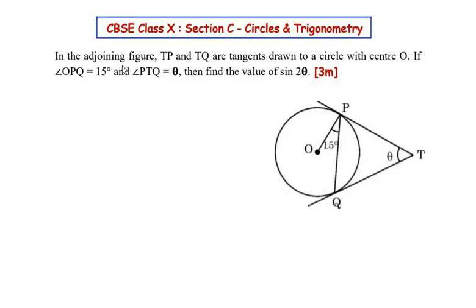Hello and welcome to my channel. In this video we are going to solve a Section C question which is a combination of circles and trigonometry, and it had appeared in the CBSE board exam 2025. In the adjoining figure, TP and TQ are tangents drawn to a circle with center O. If angle OPQ is equal to 15 degrees and angle PTQ is equal to theta, then find the value of sin 2theta.